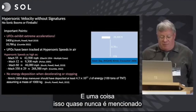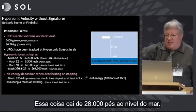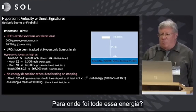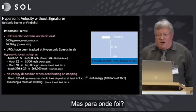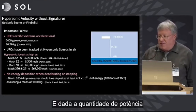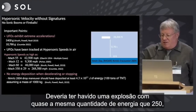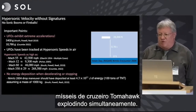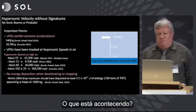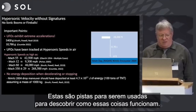One thing that's almost never mentioned is there's no energy deposition when they stop. This thing drops from 28,000 feet to sea level, getting up to about 42,000 miles an hour in the middle, and then stops. Where did all that energy go? Energy doesn't just disappear. When this thing comes to a stop, there ought to have been an explosion. Given the amount of power involved, it should have been an explosion equivalent to about 250 Tomahawk cruise missiles blowing simultaneously. That's what should have happened. It didn't. We don't know what's going on — but I treat these all as clues to figure out how these things work.